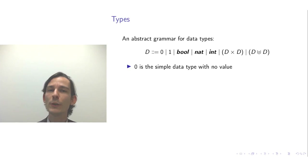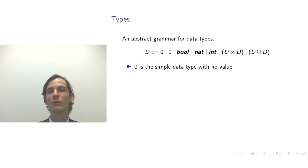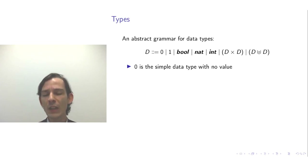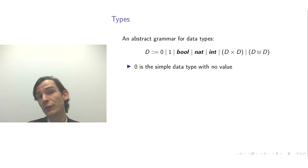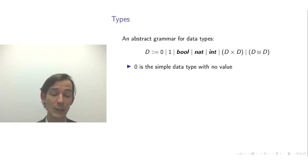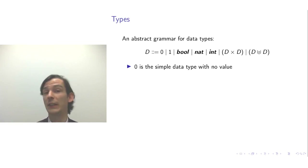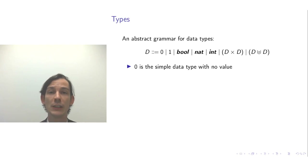We haven't seen 0 and 1 before, so let me explain them. The type 0 is the simple data type that has no value at all. A data type consists of a set of values that each have a unique digital encoding. Since 0 has no values, the set is empty, and it vacuously holds that every value has a unique digital encoding. So 0 can indeed be considered a data type.